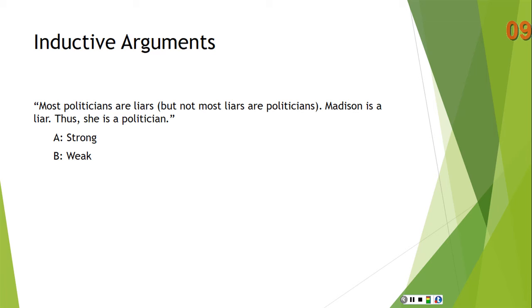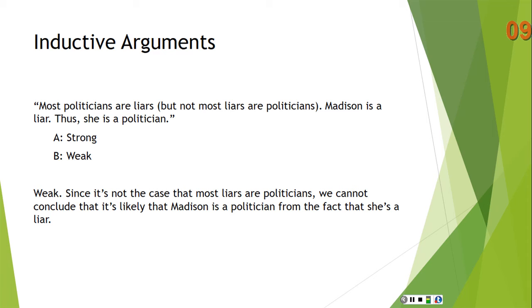How about this argument? Most politicians are liars, but it's not the case that most liars are politicians. Madison is a liar; thus Madison is a politician. This is weak — since it's not the case that most liars are politicians, we cannot conclude it's likely Madison is a politician simply from the fact that she's a liar. If it had said 'most politicians are liars, Madison is a politician, thus Madison is a liar,' that would have been strong given the word 'most.'